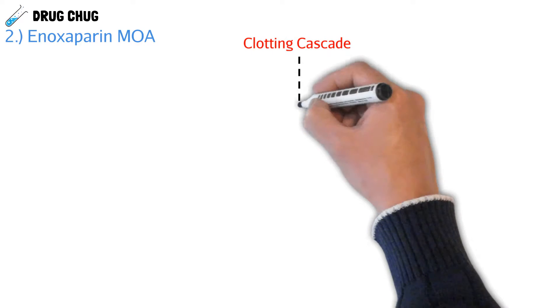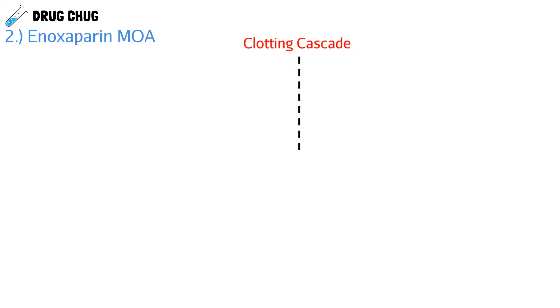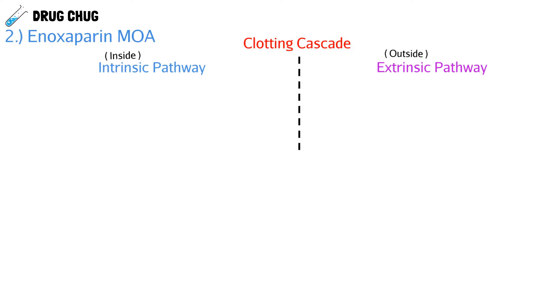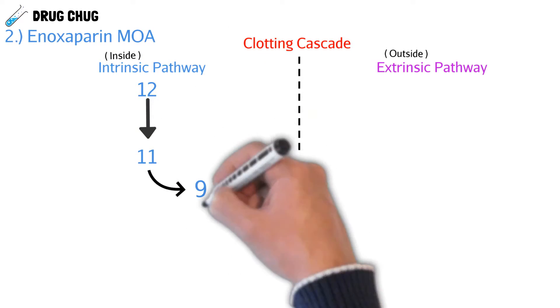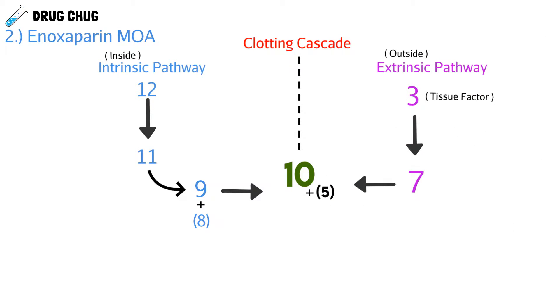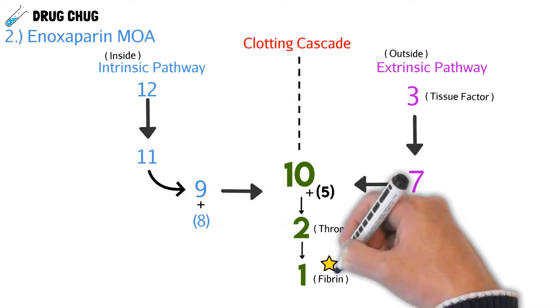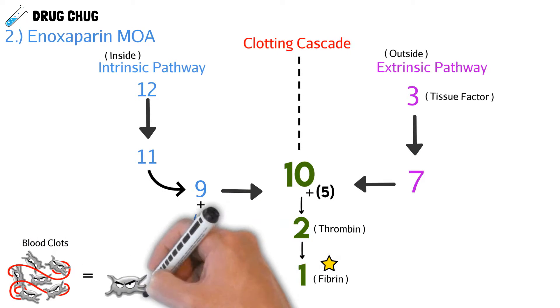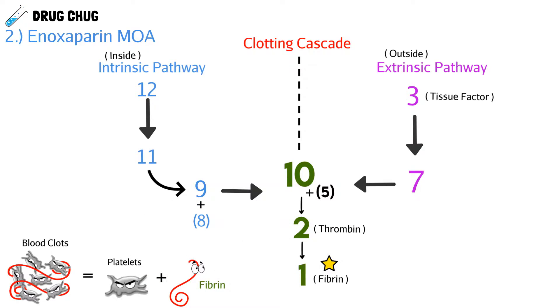Now that we know a bit more about enoxaparin, we can talk about how it actually helps prevent blood clots — and to know that we need to learn about the clotting cascade. We have the intrinsic and extrinsic pathways. Both sides have different clotting factors and they meet in the middle at factor 10, then factor 2, and lastly at factor 1 which is fibrin — our end product. Blood clots require both platelets and that fibrin from the clotting cascade.